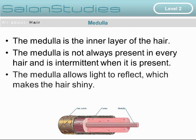The medulla. The medulla is the inner part of the hair. The medulla is not always present in all hair types and is intermittent even if it is present. The medulla allows light to reflect, which makes the hair shiny.